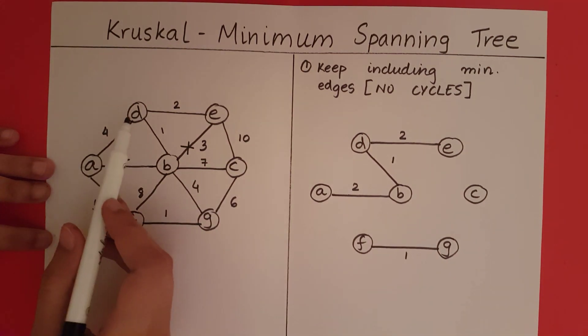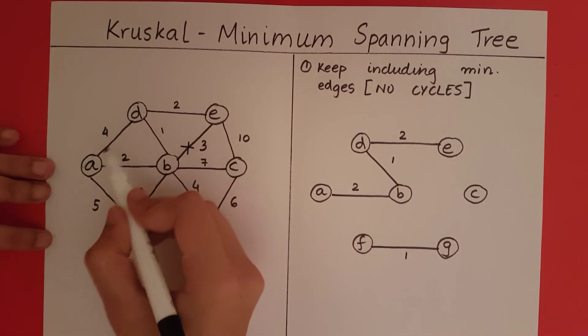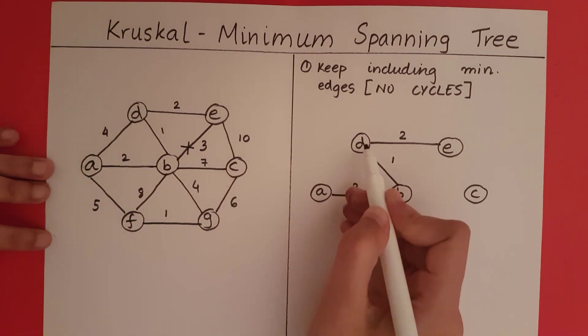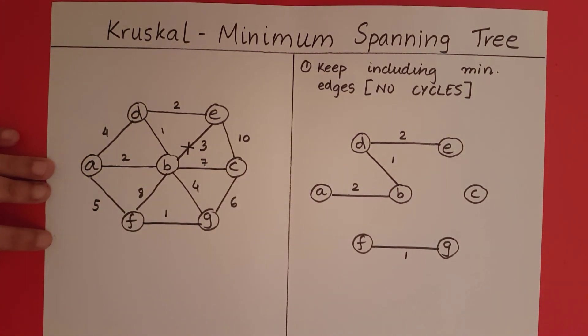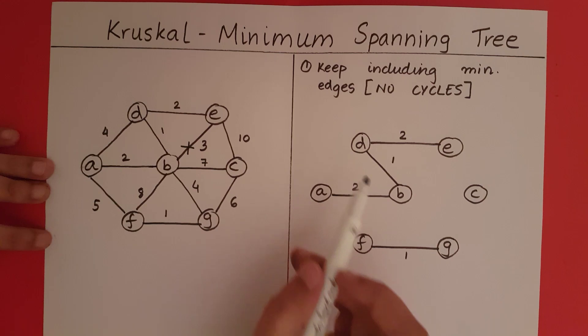Now I go to 4. I have 2 4s here. Can I include this 4? No, I cannot include that 4 because that would create a cycle between D, B, and E.